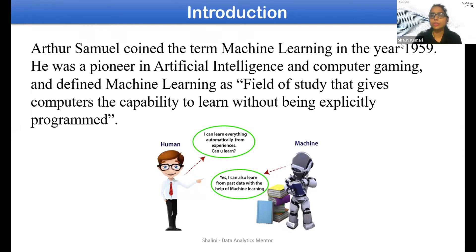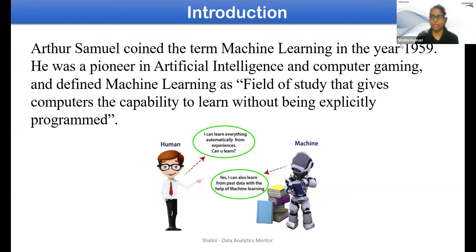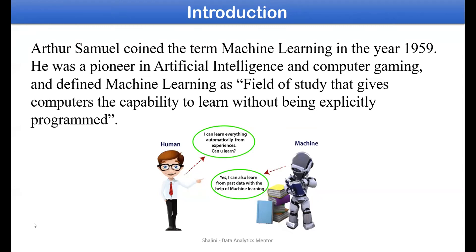When we say 'without being explicitly programmed,' it means we don't need to do the coding from outside — the machine can learn by itself and then perform the task. Just like a human says 'I can learn things on my own,' the machine says 'whatever data or information you store inside me, I can learn from my previous experiences and give you the result.'